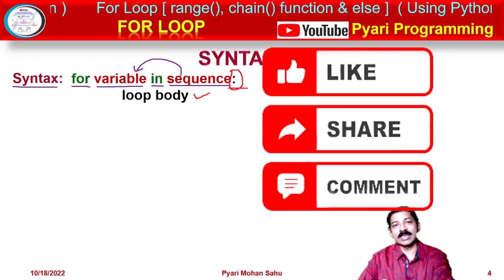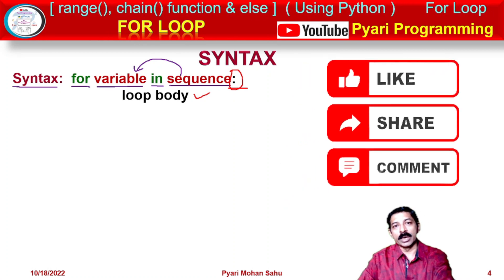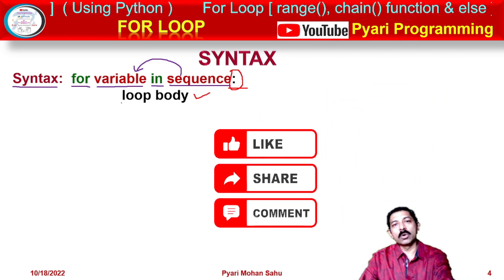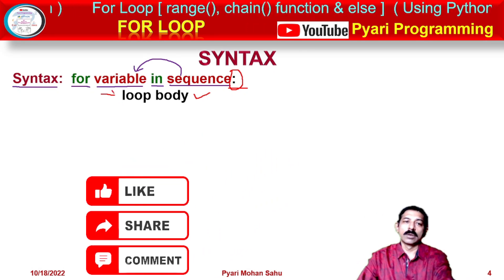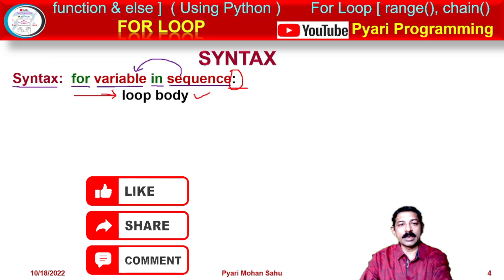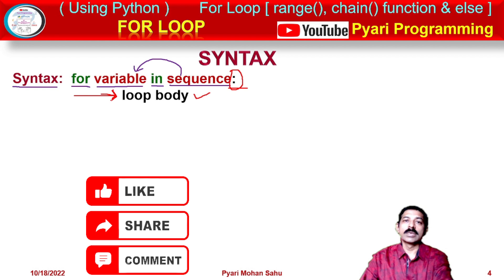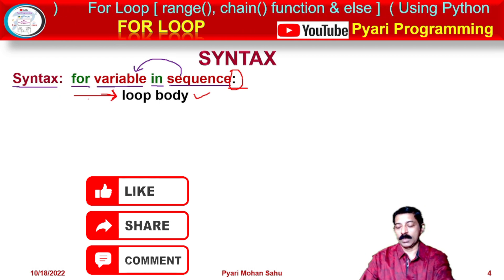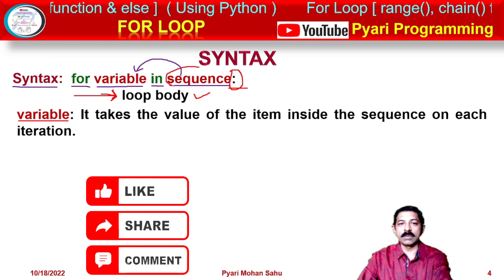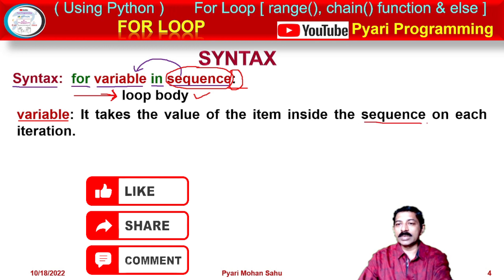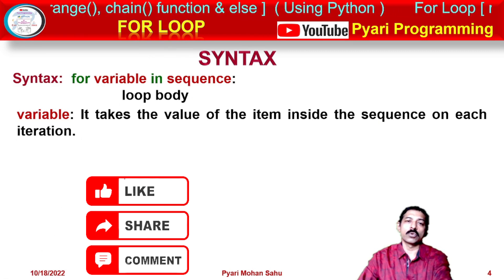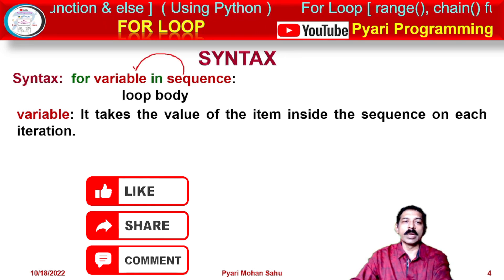A block means one or more statements that need to be executed with the for loop. We can write any number of statements inside the block. The most important rule is that the statements must be indented to the right — if placed on the left side, it will generate an error. The variable takes the value of each item from the sequence on each iteration, extracting elements one by one.